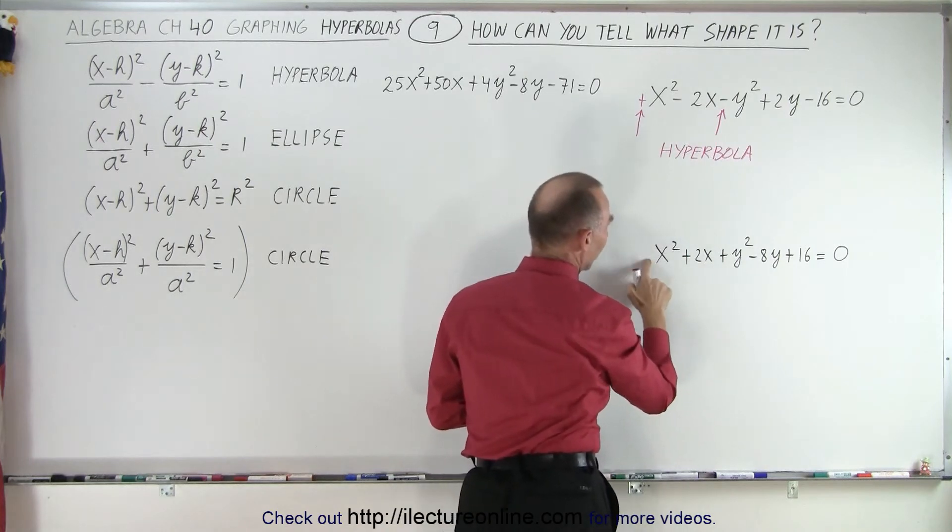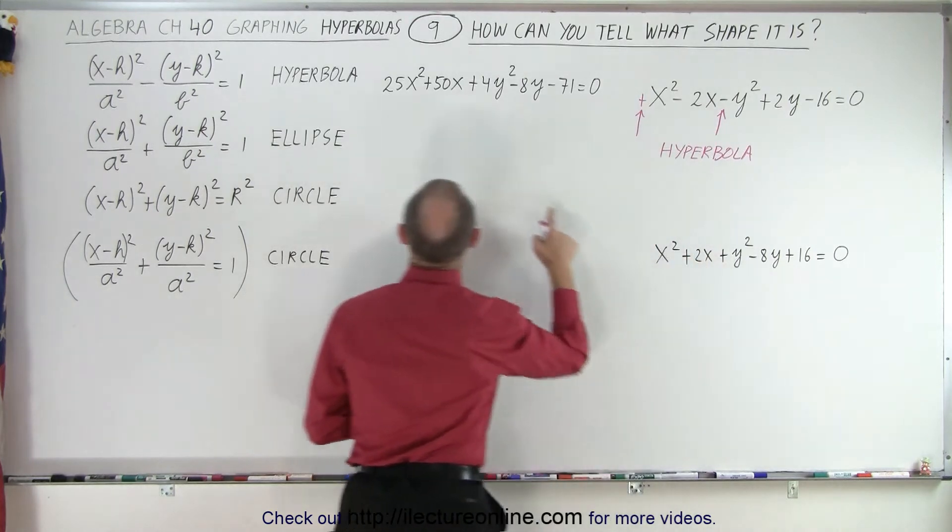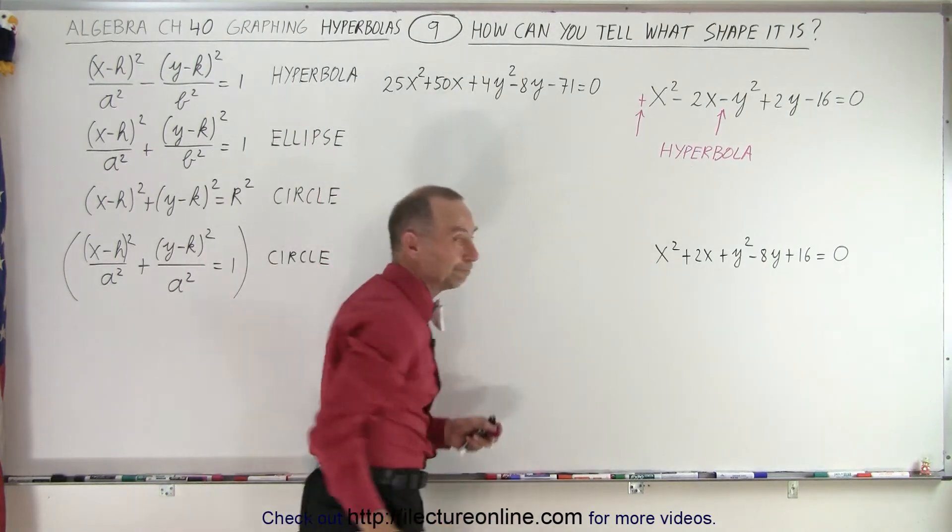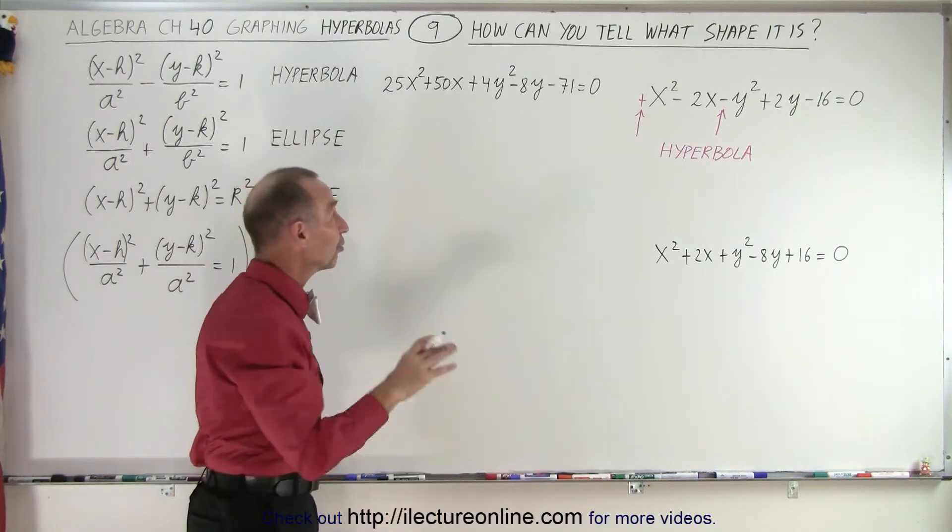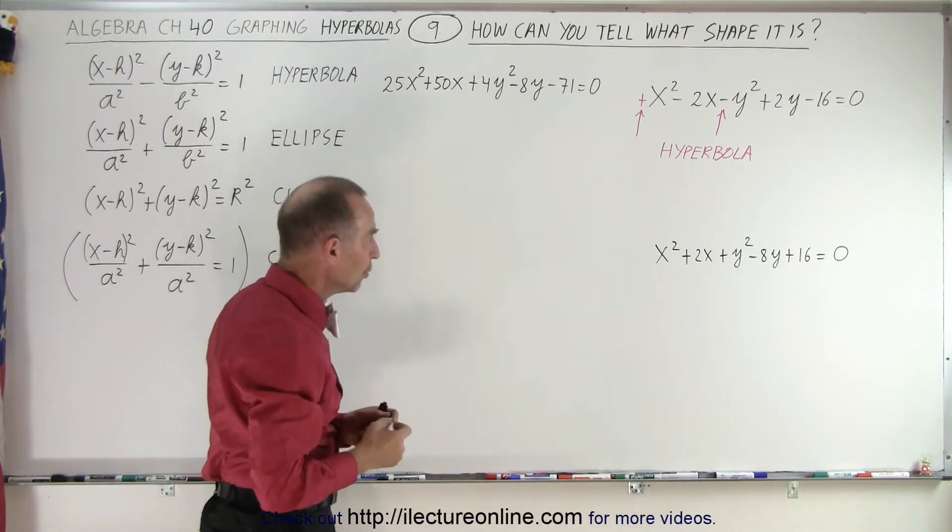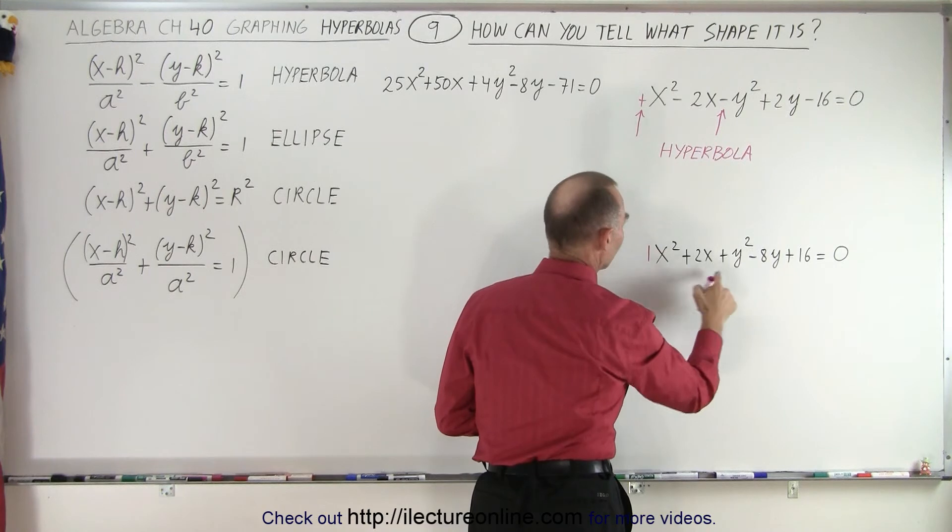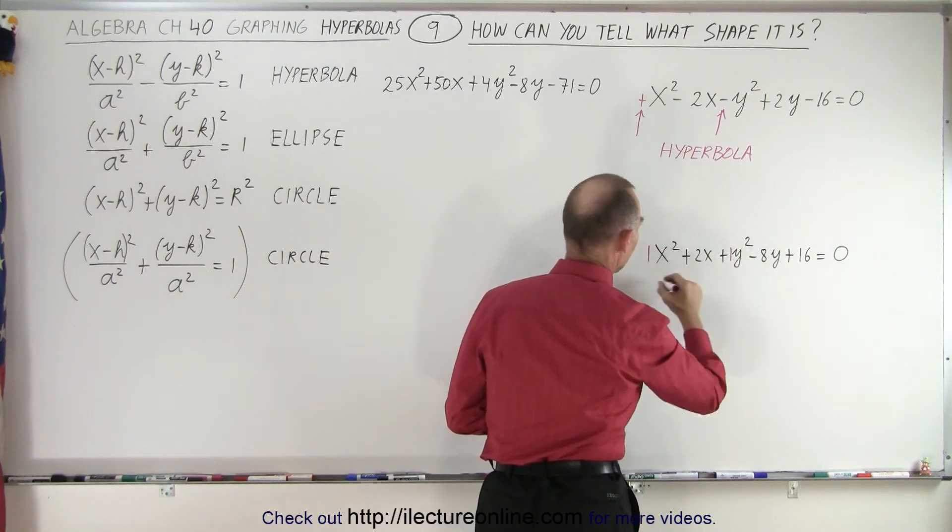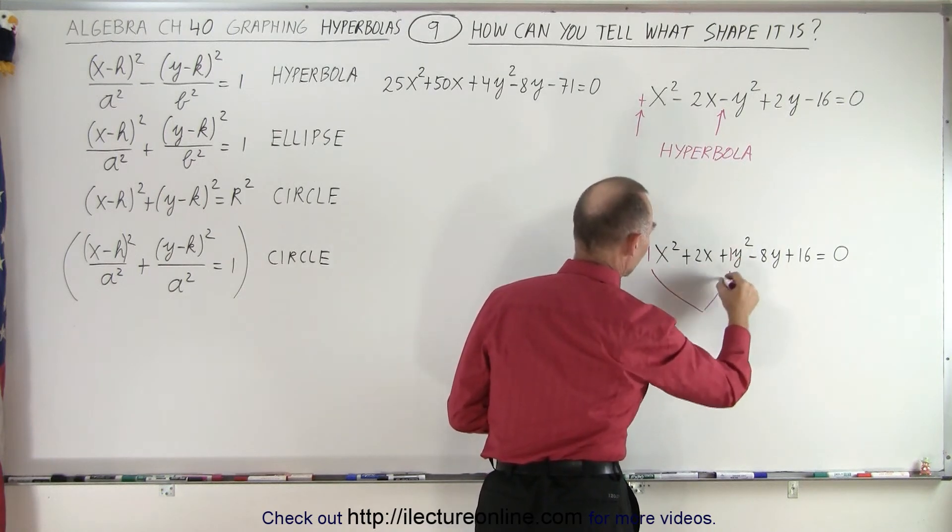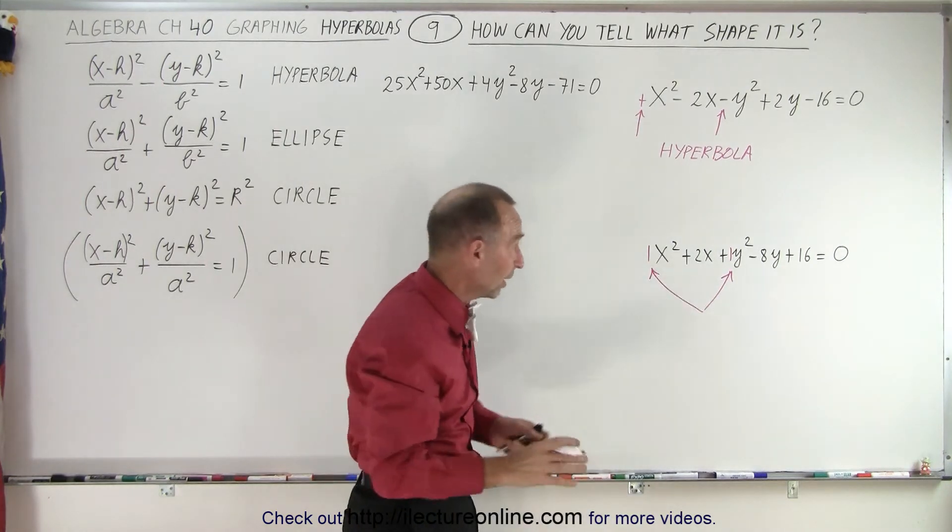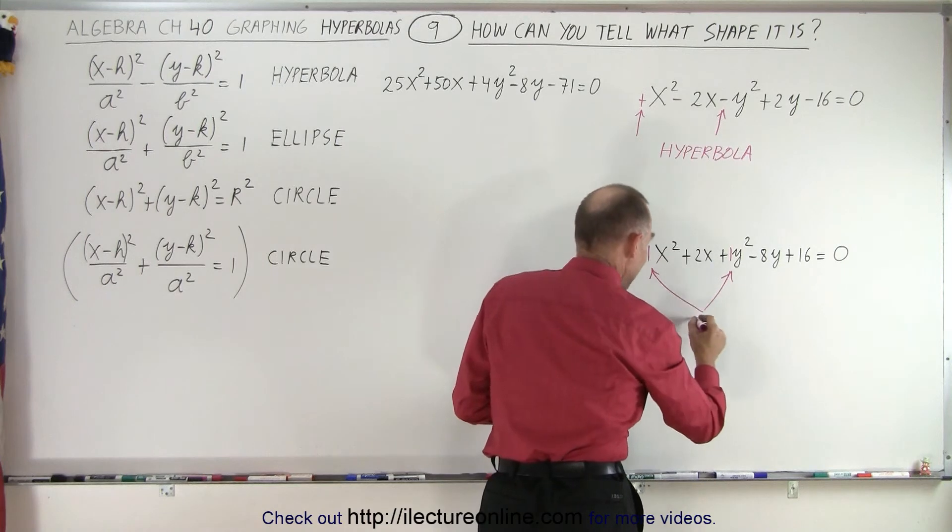Notice we have a positive and a positive. We have a positive and a positive. So these are either ellipses or circles. Note the difference between a circle and an ellipse. Notice that in front of the x-square term you have a 1, in front of the y-square term you have a 1. If those two numbers are the same, they don't have to be 1, they could be 4s or 9s or whatever, it doesn't matter. But if they're the same, then you know you're dealing with a circle.